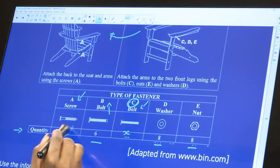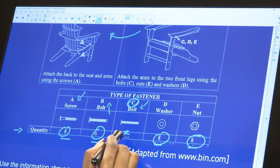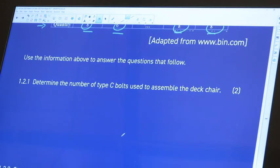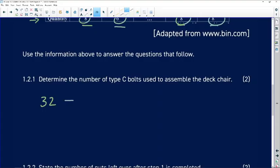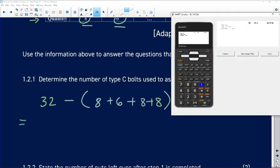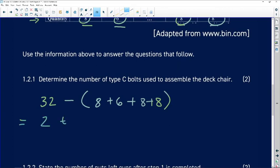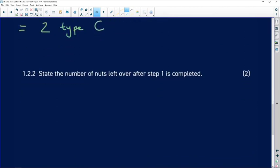So because we've got 32 in total, that simply means that we are going to subtract these numbers and that's going to give us the answer for C. So we've got 32 in total, and then we're going to subtract the other ones that we are given, which is 8 plus 6 plus 8 plus 8. So we put that in our calculator: 32 minus 8 plus 6 plus 8 plus 8, close your brackets, and that gives you two of type C. So you can just say two type C or you can say two bolts.